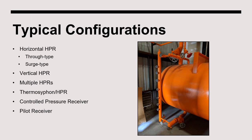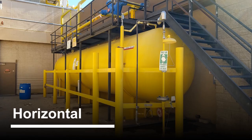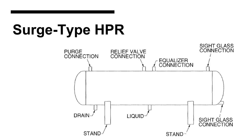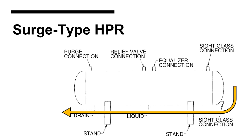There are many ways that a high pressure receiver can be configured. Often, high pressure receivers have a horizontal orientation. Horizontal receivers can be configured as through type, which means that liquid from the condenser flows through the vessel before being supplied out into the system. Alternatively, high pressure receivers can be arranged as surge type receivers. When this is the case, ammonia draining from the condensers is piped directly to the system, and ammonia will only surge into the vessel if all system loads are satisfied.